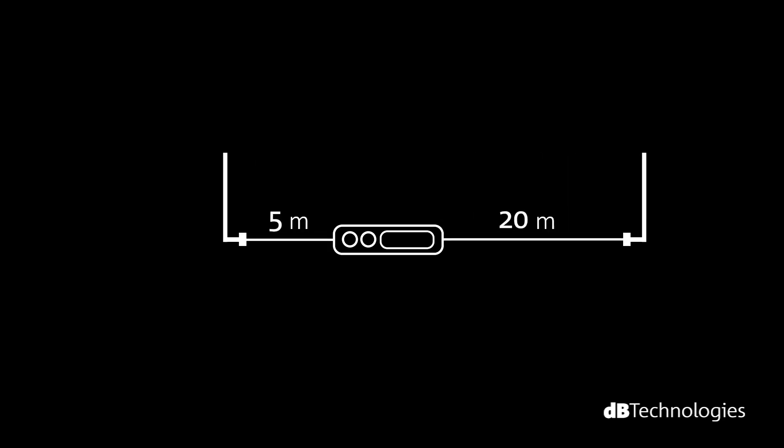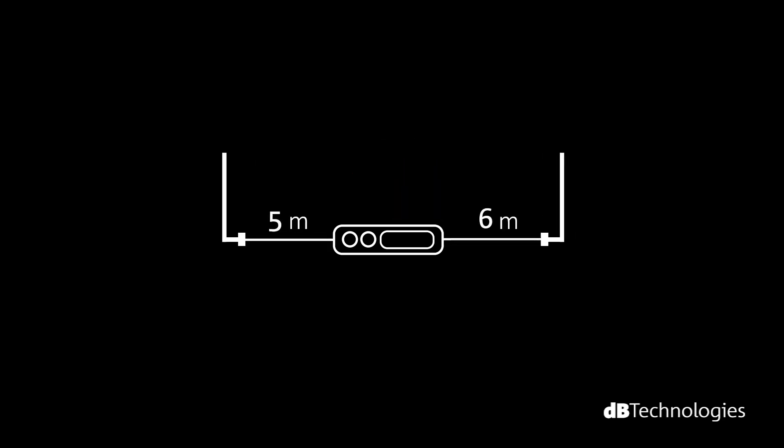It is important for the cables connecting the antenna to the receiver to always be of the same length, in order to avoid malfunctioning due to different inbound signal levels. Let us analyze some of the problems caused by the way antennas are positioned during the installation phase.